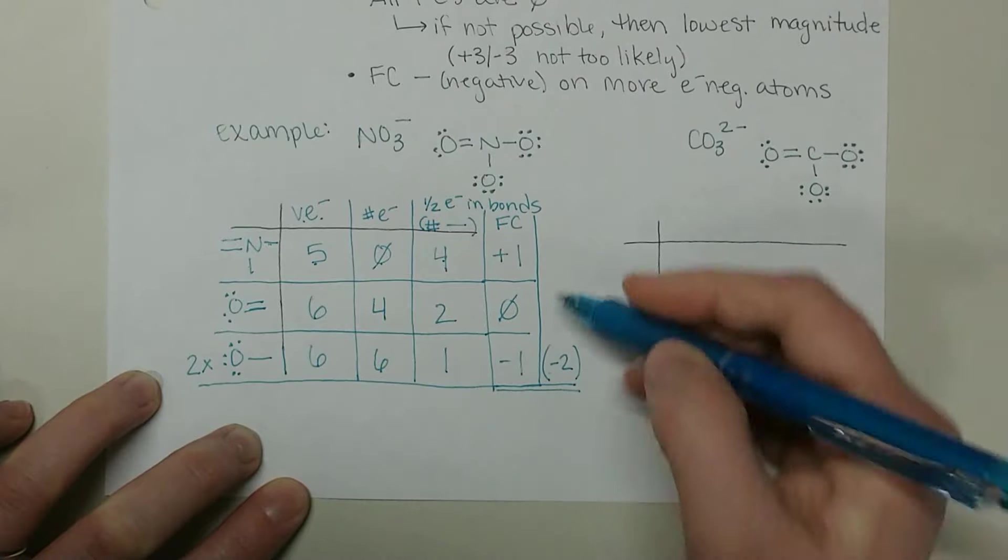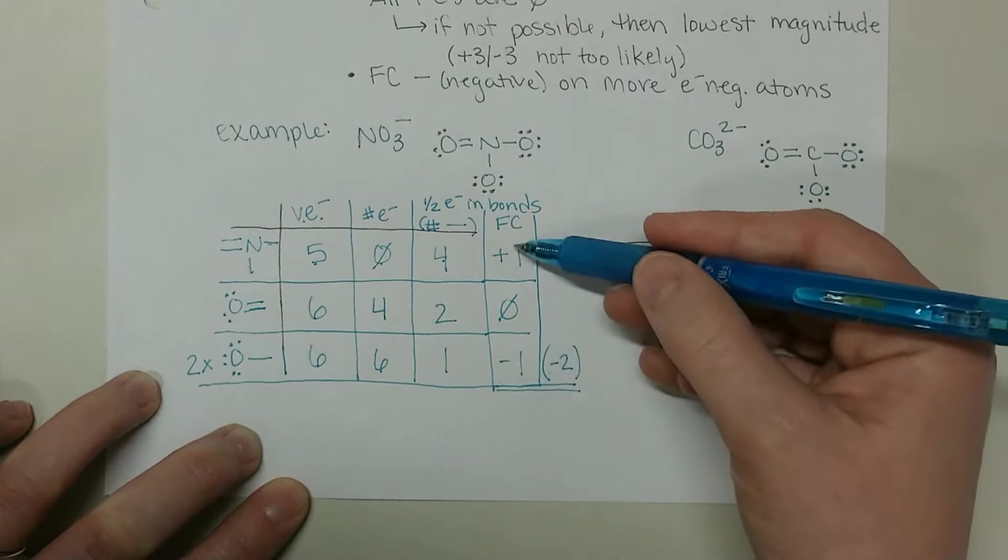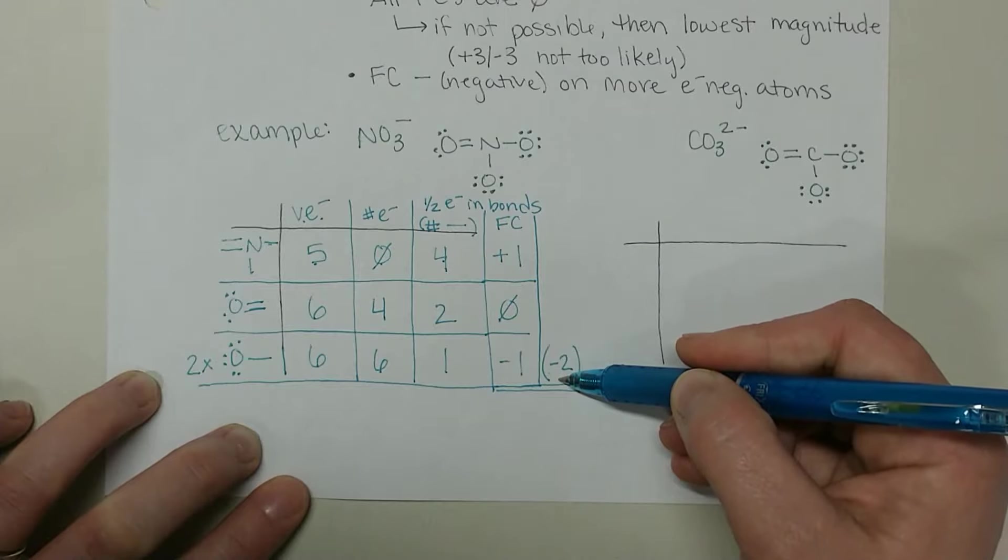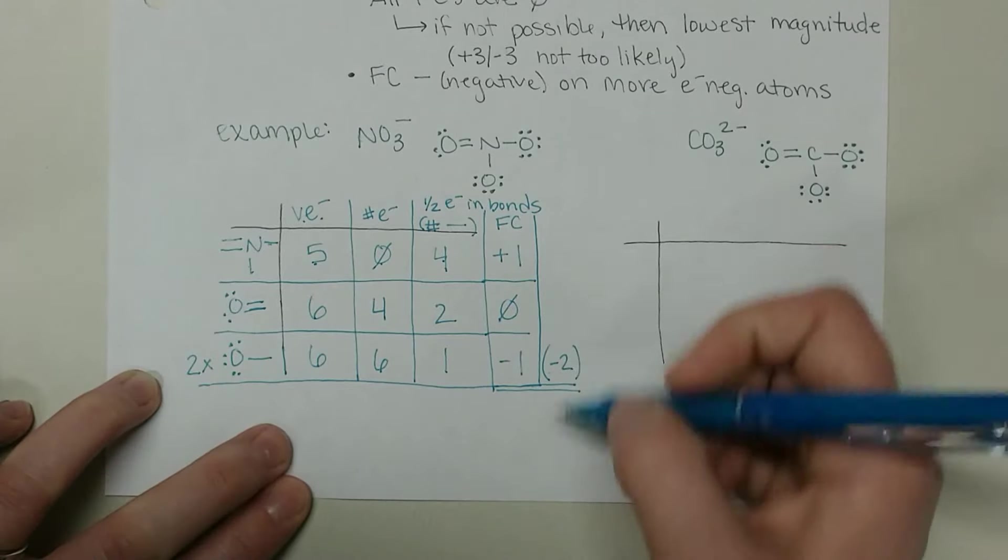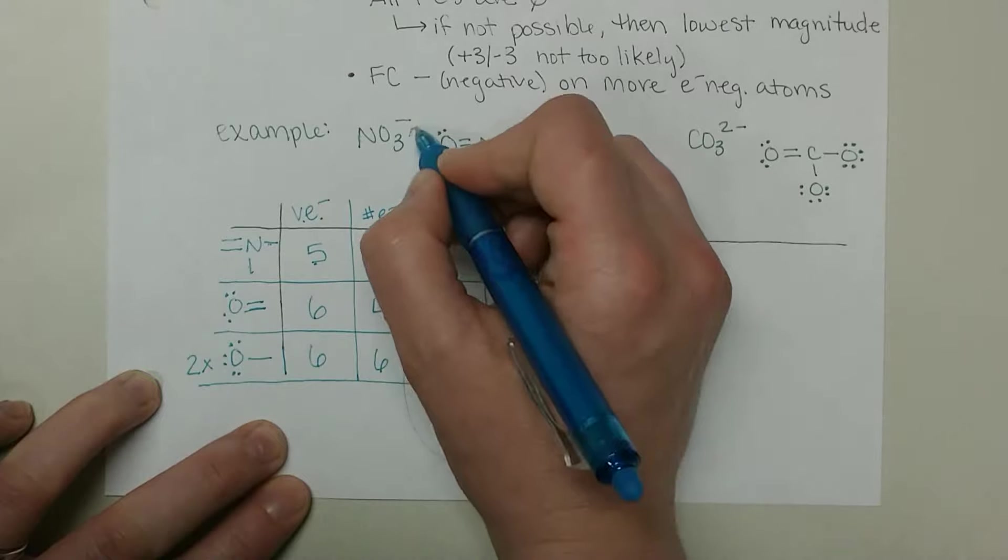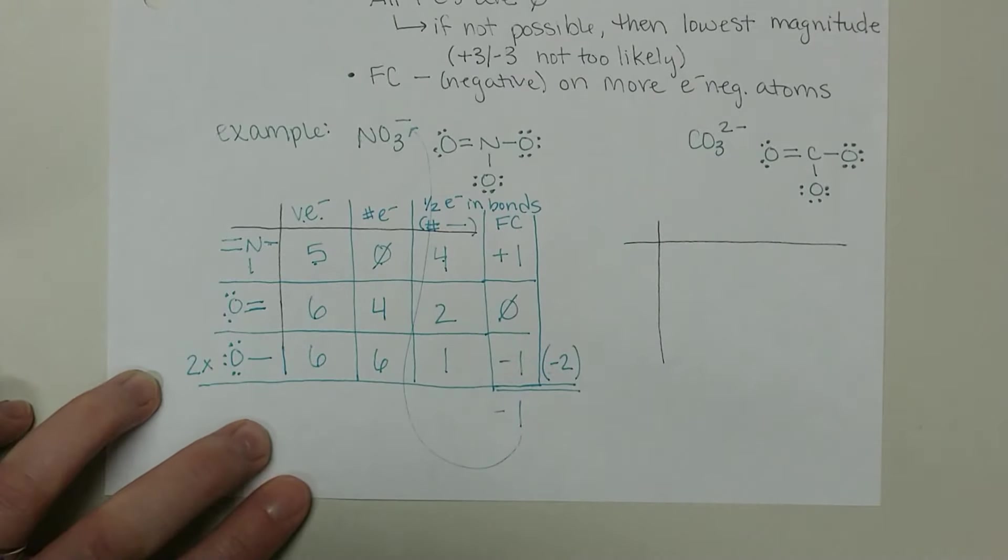Our sum of our formal charges - we have a plus one on the nitrogen and then two negative ones for a total of negative two from the two oxygens. We get an overall formal charge on that molecule of negative one, which is what we needed from that original negative one charge on nitrate.